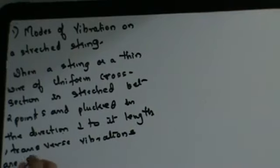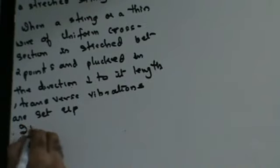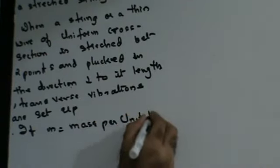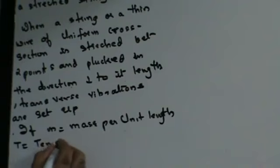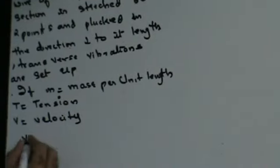So you will have transverse vibrations set up if you pluck the string in a direction perpendicular to its length. If m is the mass per unit length and T is the tension on the string, then the velocity of the transverse waves is equal to square root of T by m.